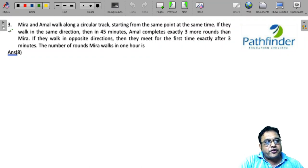CAD 2021 slot 3 question number 3. Meera and Amal walk along a circular track starting from the same point at the same time. If they walk in the same direction, then in 45 minutes, Amal completes exactly 3 more rounds than Meera.